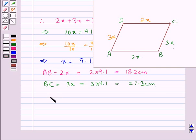And since we have AB is equal to CD, so this would be equal to 18.2 centimeters. Also, BC is equal to AD, which would be equal to 27.3 centimeters.